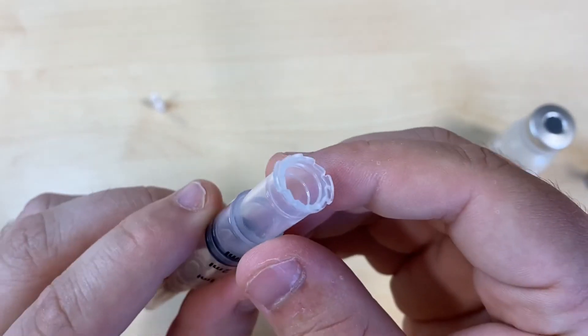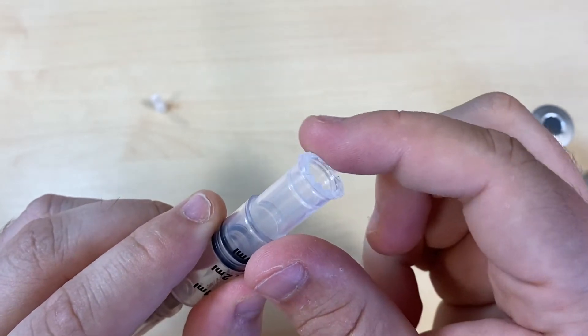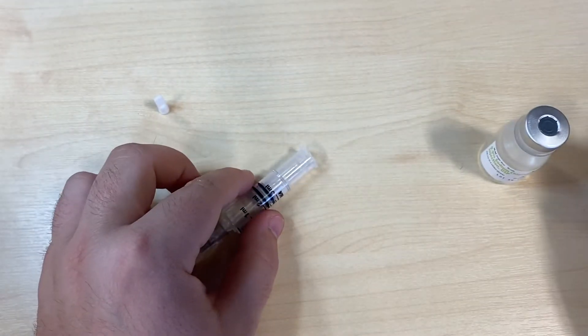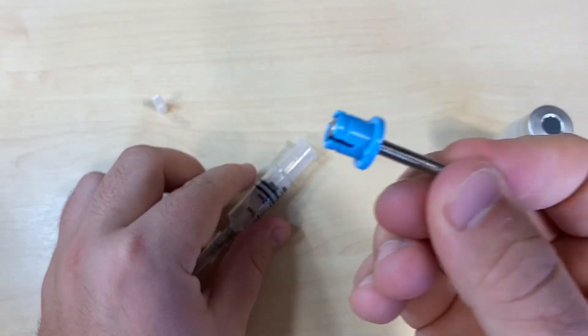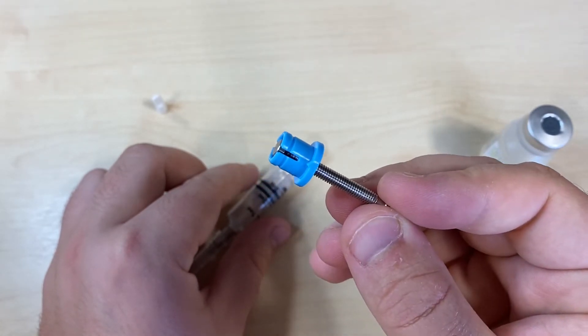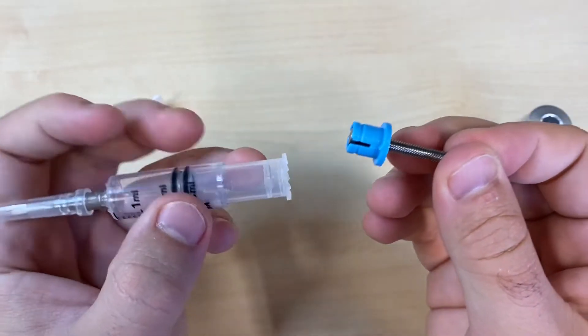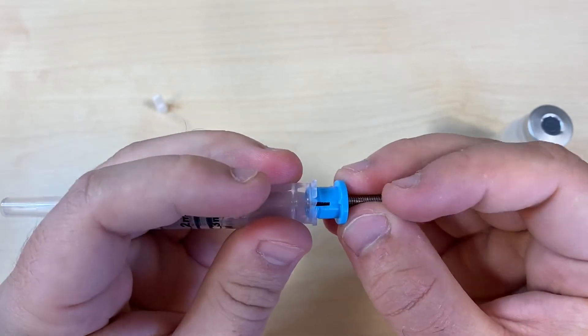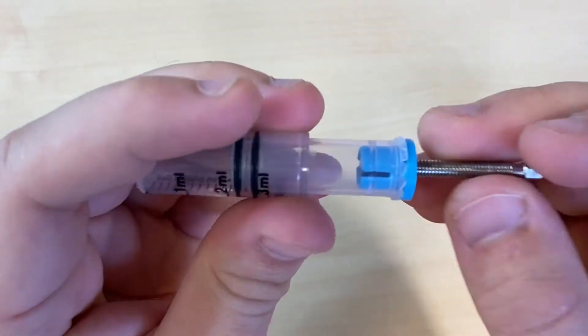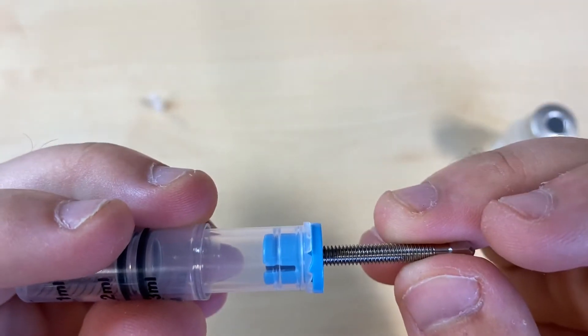There are teeth all around the base of the syringe. There are two corresponding teeth on either side of the linking screw. Clip the linking screw into the cartridge, making sure the teeth make a proper connection.